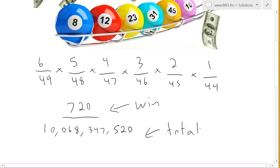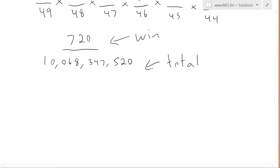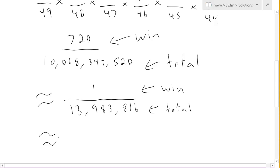So, if we actually divide that through, it's going to come to about 13,983,816. So, that means for every one time you win, you're going to have to play a total of 13,900,000. We're going to just round that up to 14 million.